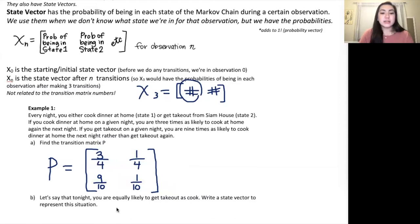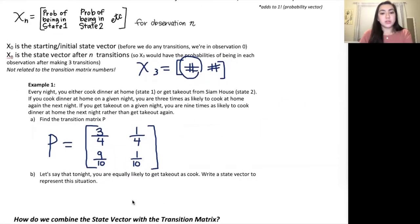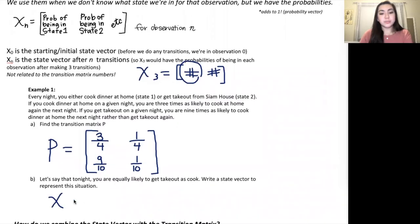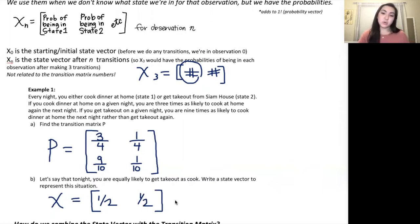The next part says: if tonight you are equally likely to get takeout as to cook, write a state vector to represent the situation. We're not going to refer to anything in the transition matrix — we're not transitioning at all. We're simply taking a snapshot of tonight. Our state vector is a 1-by-2 vector where the first entry is the probability of cooking and the second is the probability of takeout. Since they're equally likely, each gets one-half. You can see that we did not use the transition matrix at all.